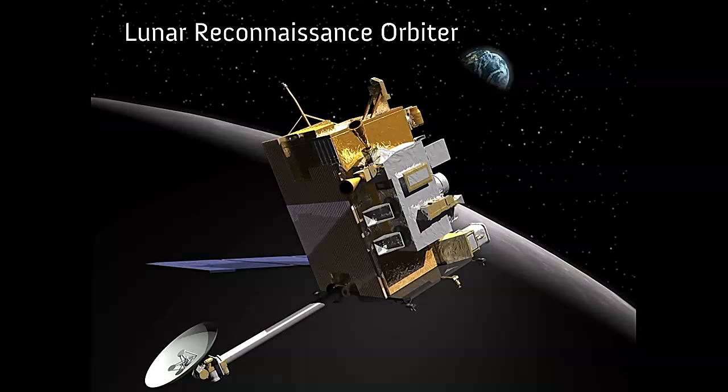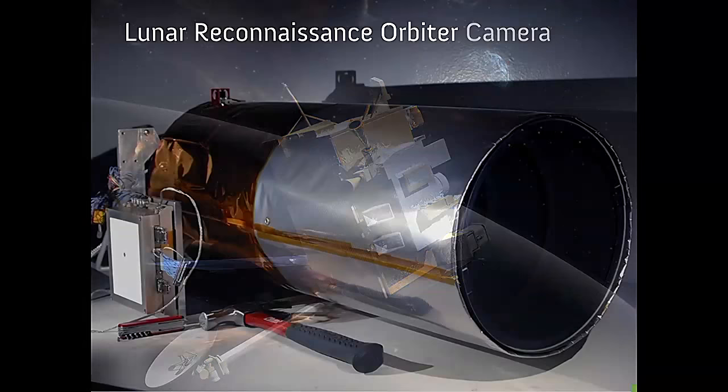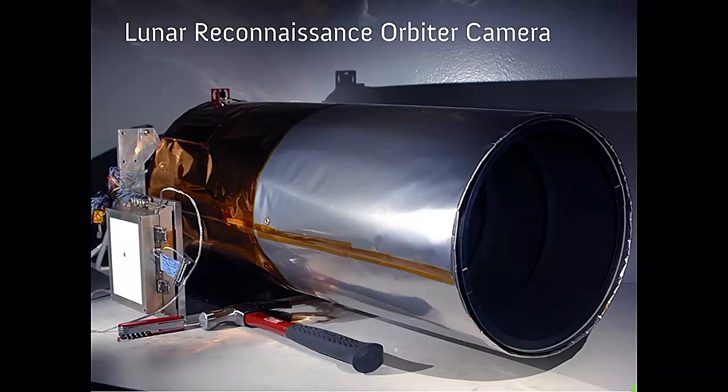This thing was sent up in 2009. It was supposed to go for two years but it's still going and it orbits the Moon at a height of 50 kilometres. So it's whizzing around really close to the Moon and it takes these really impressive satellite photographs using this device. It's a high numerical aperture camera shown here for scale with a hammer and a Swiss army knife and a wide-angle camera as well.